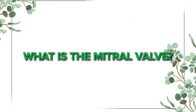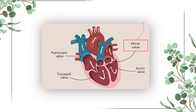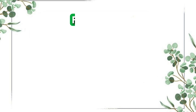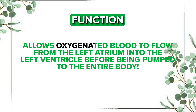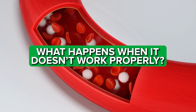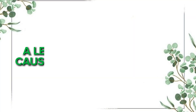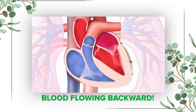What is the mitral valve? The mitral valve, also called the bicuspid valve, is located on the left side of the heart between the left atrium and left ventricle. Its function is to allow oxygenated blood to flow from the left atrium into the left ventricle before being pumped to the entire body. When it doesn't work properly — you may have heard of a leaky valve — a leaky mitral valve can cause mitral regurgitation, which means blood flowing backward.